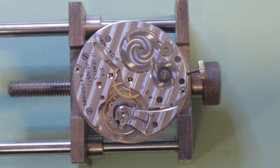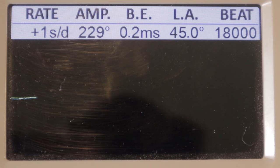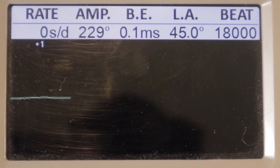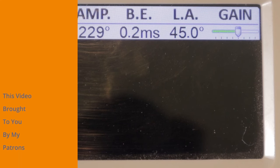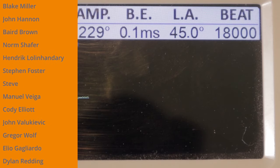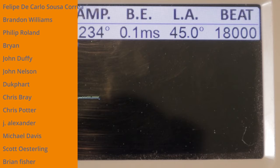You also want to be able to check the amplitude after the movement's been running for 24 hours to make sure that the mainspring has enough power. Although it does vary a little from movement to movement in general, after 24 hours from a full wind, a hand-wound movement should be around 210 degrees and an automatic movement should be around 190 degrees. If it's not, you need to figure out why before you go any further.